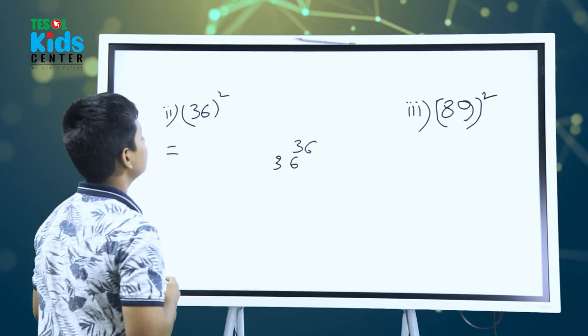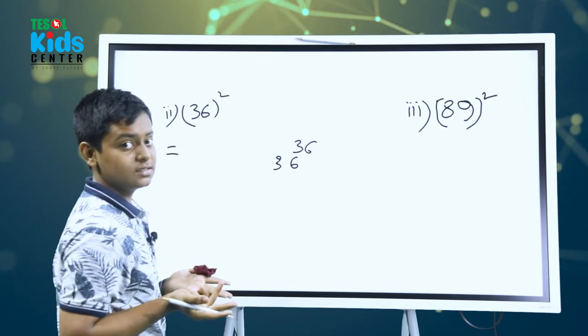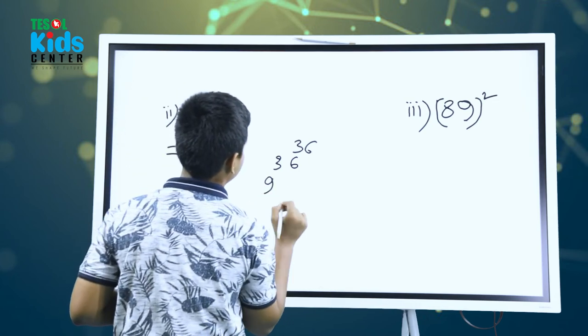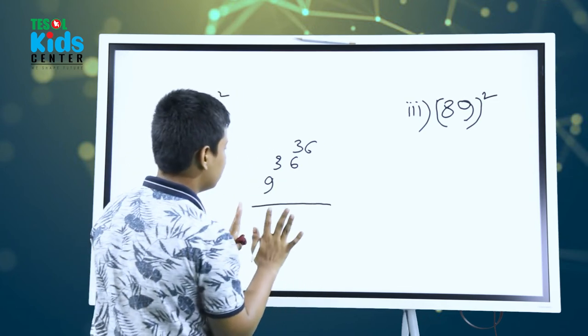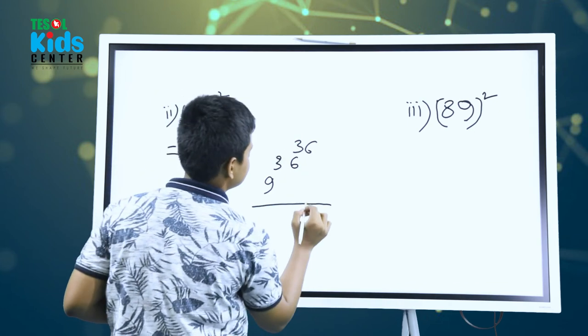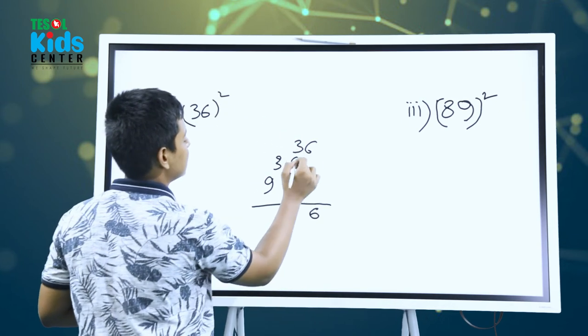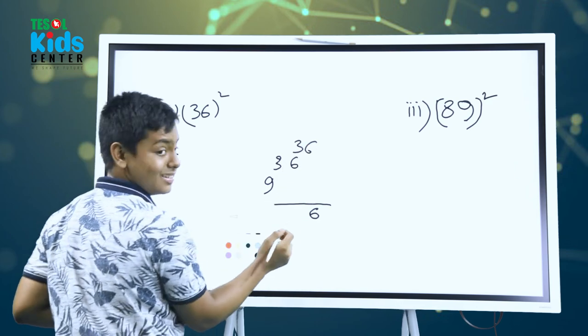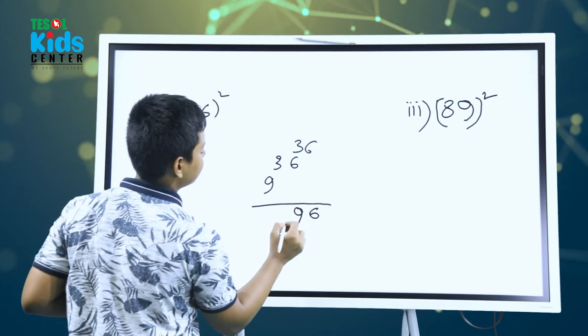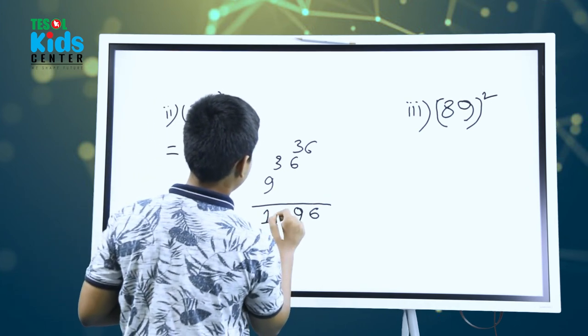Then squared of 3. So 3 squared, what is it? It's 9, obviously. So we're going to put here 9. And now all we have to do is add. 6 will come here as it has no other numbers. Then 6 plus 3 equals 9, very easy. So we're going to put here 9. And then 9 plus 3 makes 12. So 1, 2, 9, 6. Very easy.